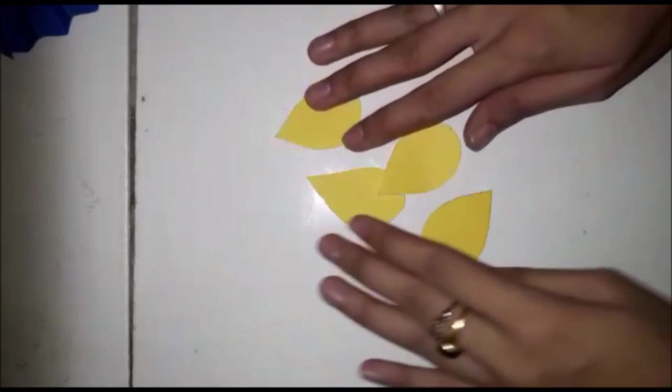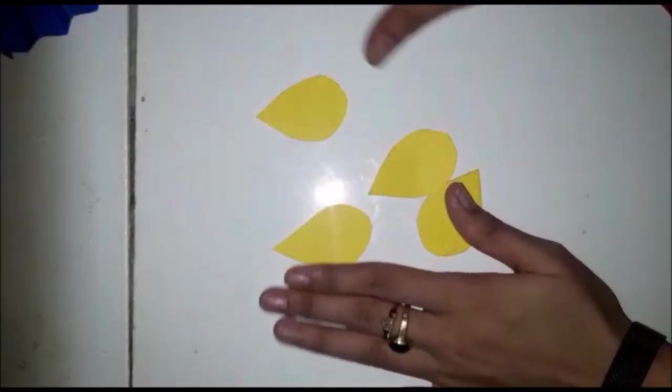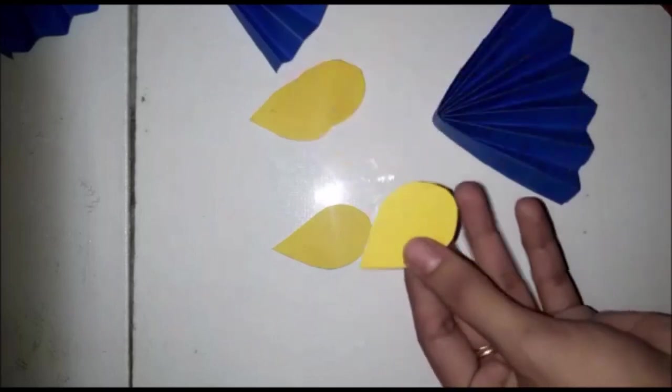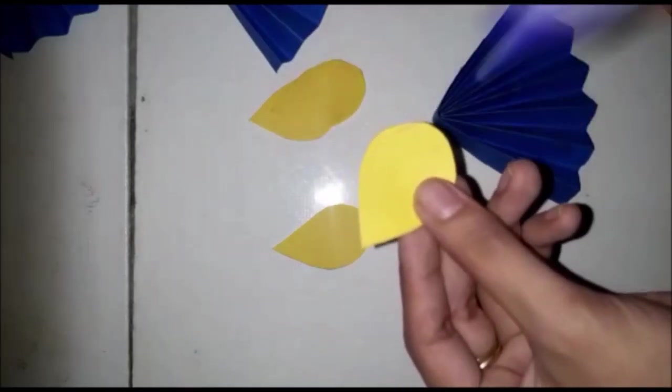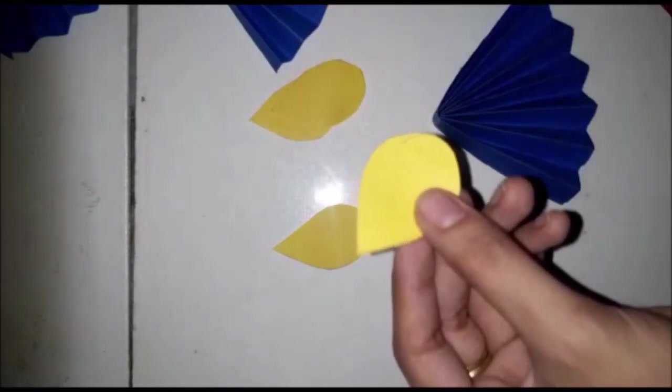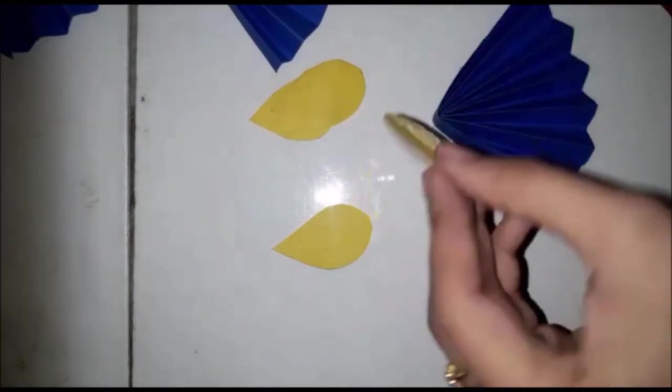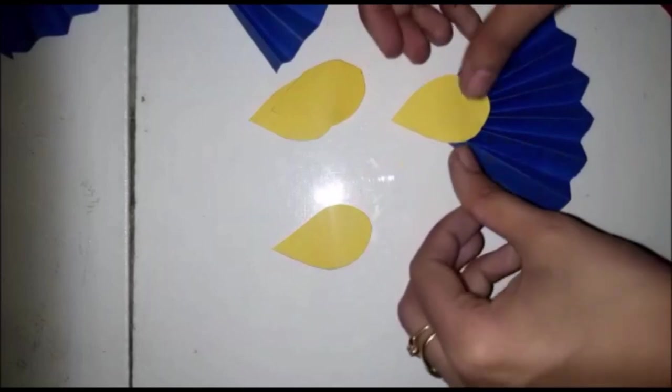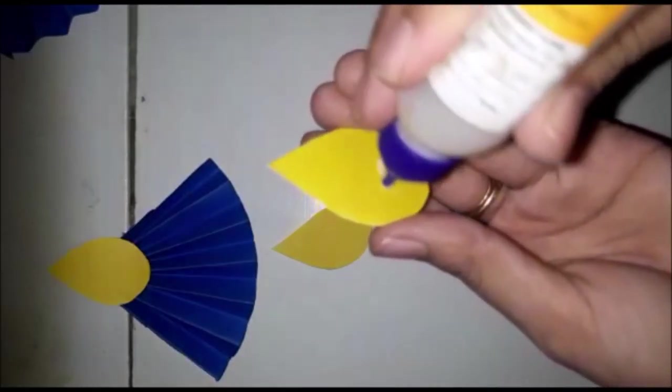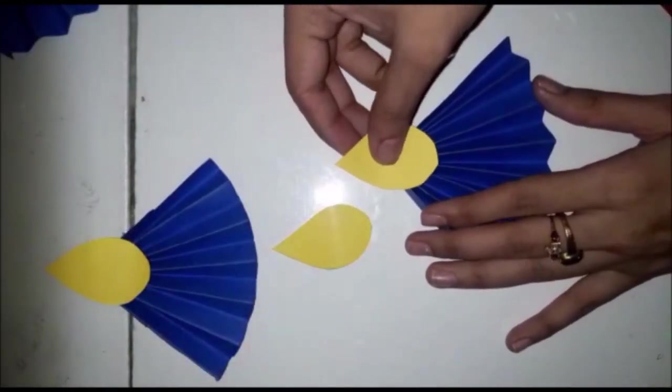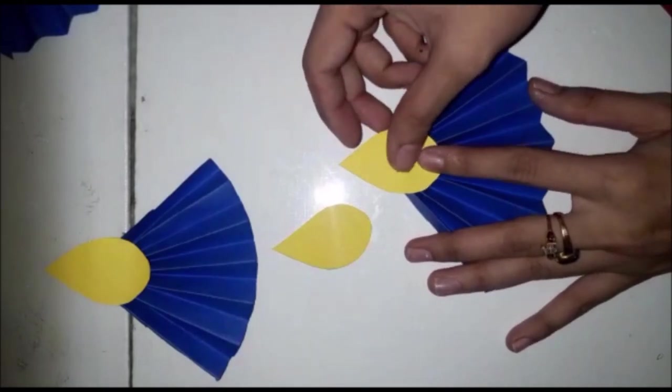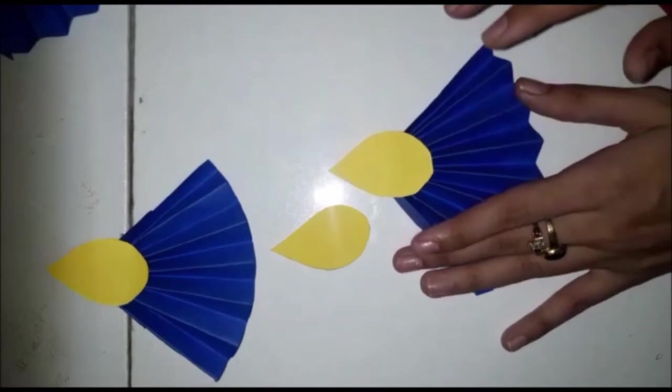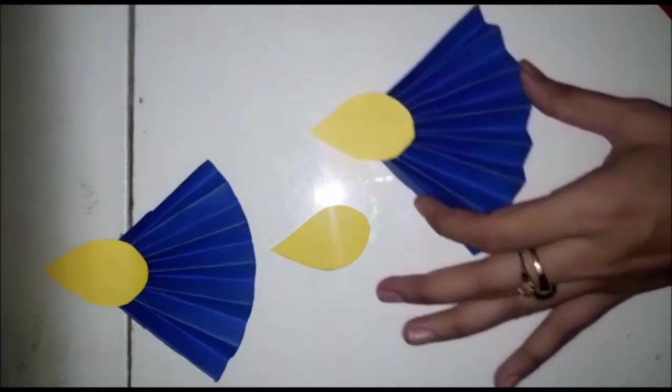So here we have four flames and four diyas. Now what we have to do? Now put some fevicol on flame and paste it. For flame, you can use red color, you can use orange color, you can use yellow color.